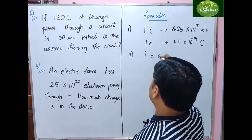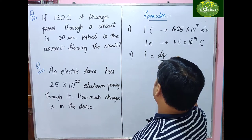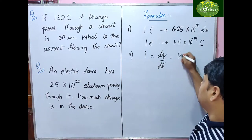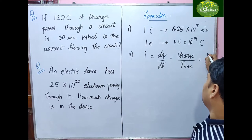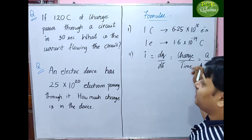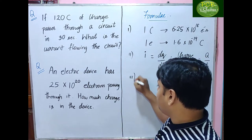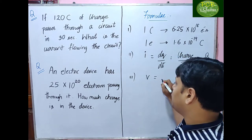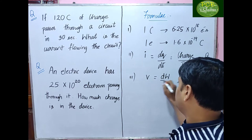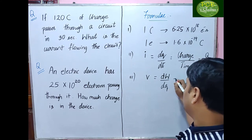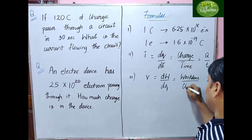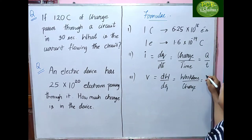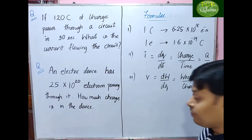The second formula is current: I = dq/dt, or another form is charge per unit time, q/t. Third, voltage V = dw/dq, which is work done per unit charge.